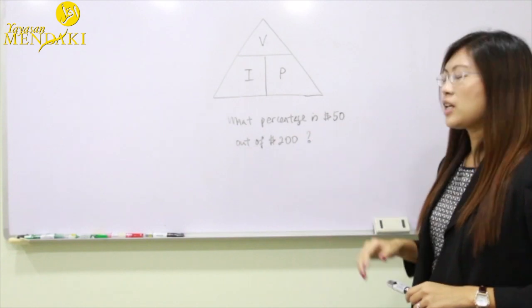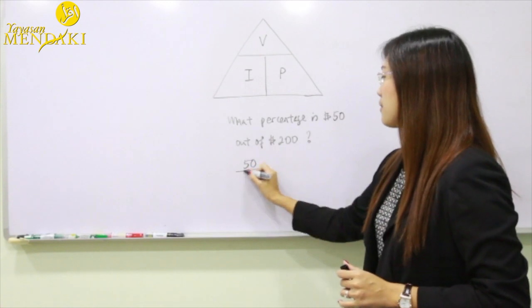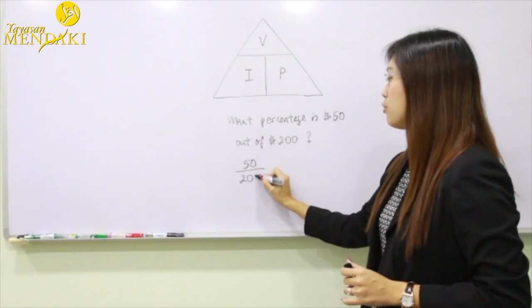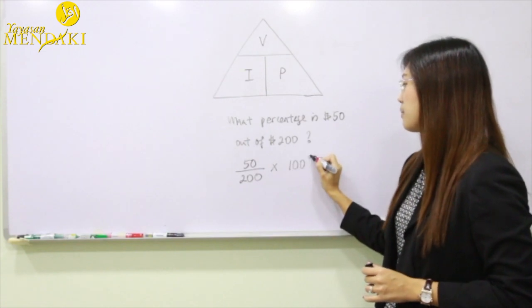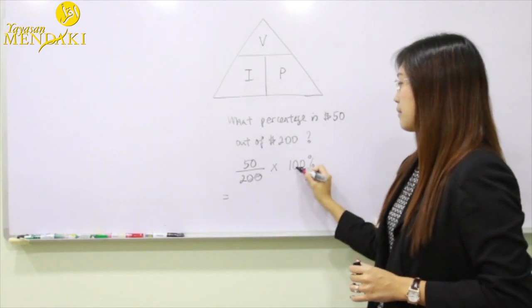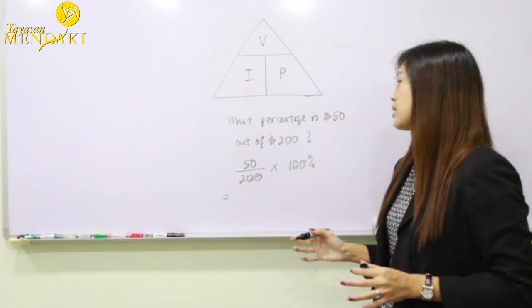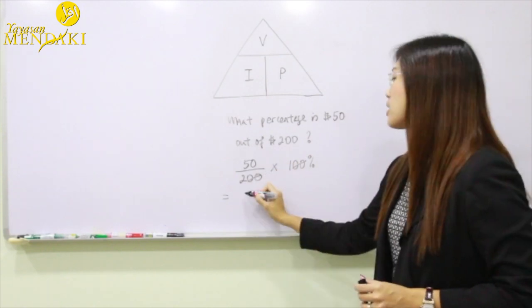For example, what percentage is $50 out of $200? First of all we're going to take the 50 divided by 200 and we have to multiply by 100%. We're going to cancel the common zeros and hence it gives us 50 divided by 2 which gives you an answer of 25%.